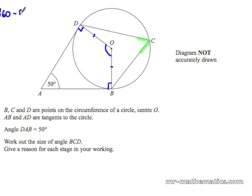The angle O at the centre will be 360, take away 50, take away 2 lots of 90, which is 180. So, the angle at the centre comes out to 130 degrees.